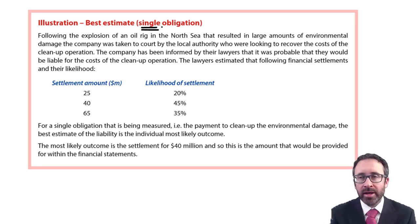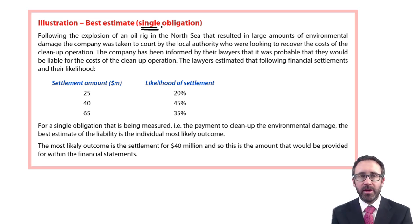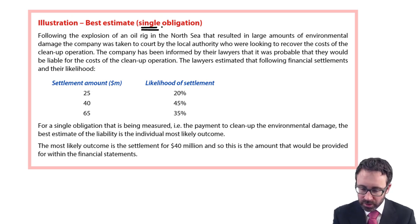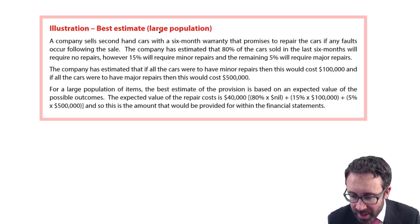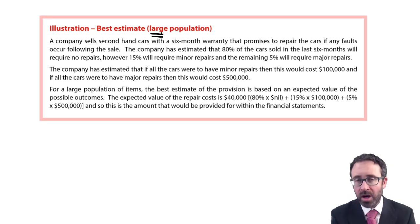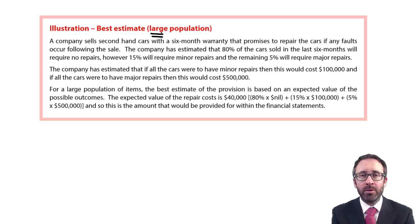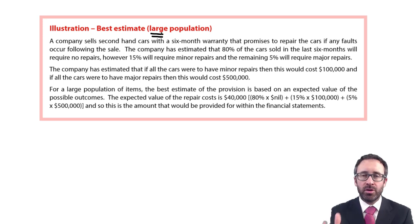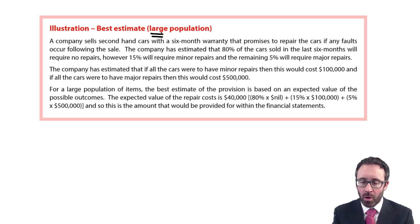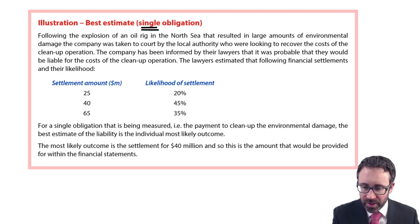By single obligation we mean there is just one outcome — one court case and we're either going to lose it or win it. If we lose it there's going to be a provision. We then need to compare that to a large population, where there isn't just one possible outcome but numerous possible scenarios, and we need to work out a best estimate as an average over all of those.